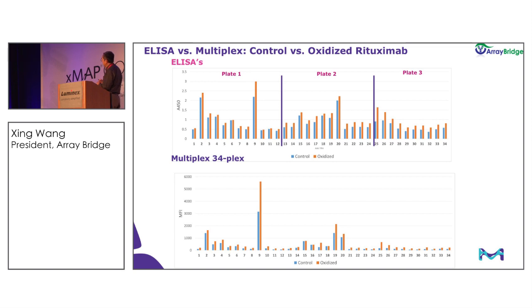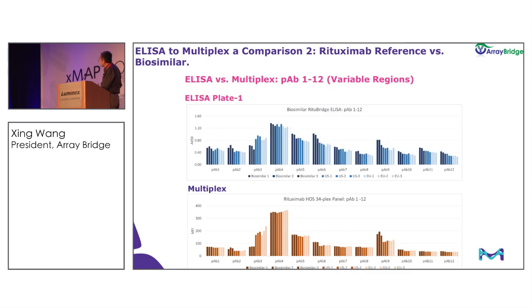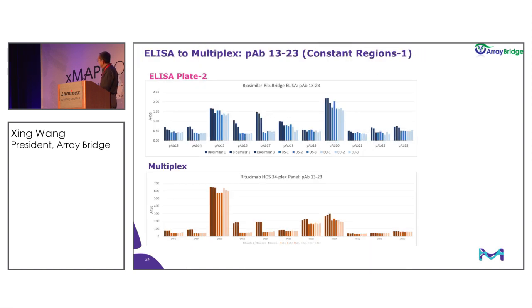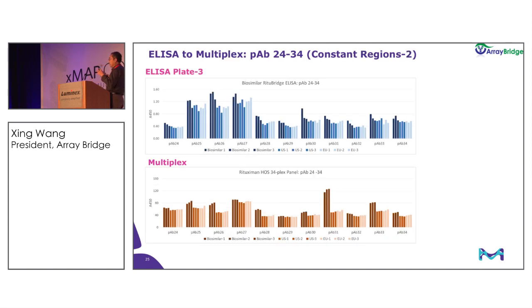This is a real sample we tested — Rituximab — tested in a typical minimum batch as required by FDA: three batches from the innovator, each from the intended markets — three from the US, three from Europe, and three of their own. This is the comparability analysis, and you can see the variable region is very similar between the two formats. The constant region also shows a very similar pattern, with some minor differences probably due to different physical settings, but for the most part quite similar.